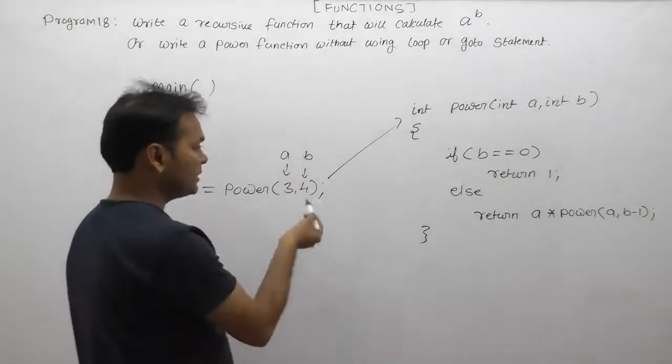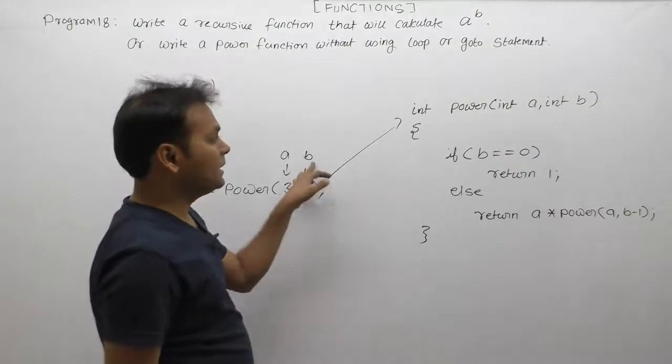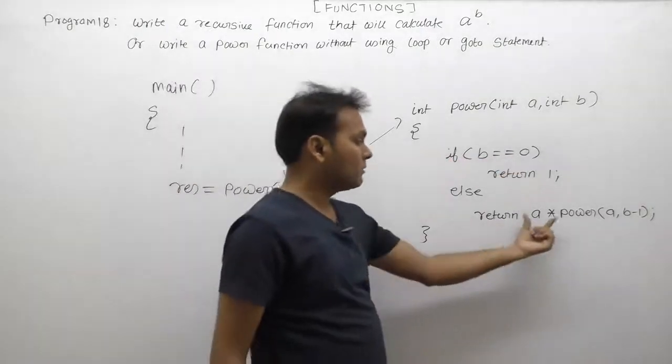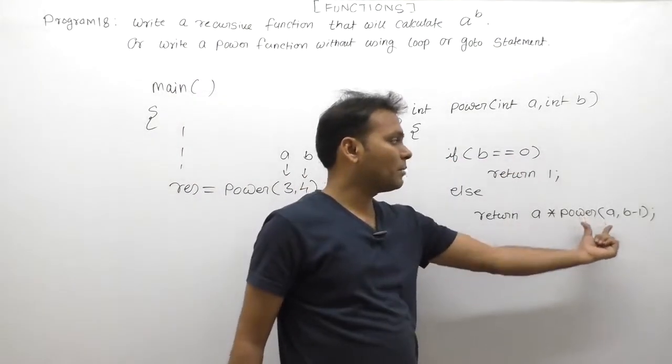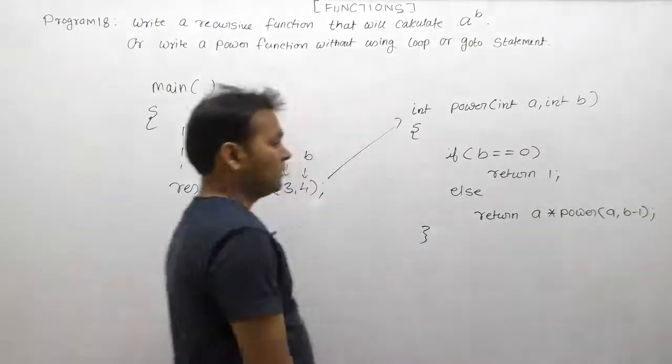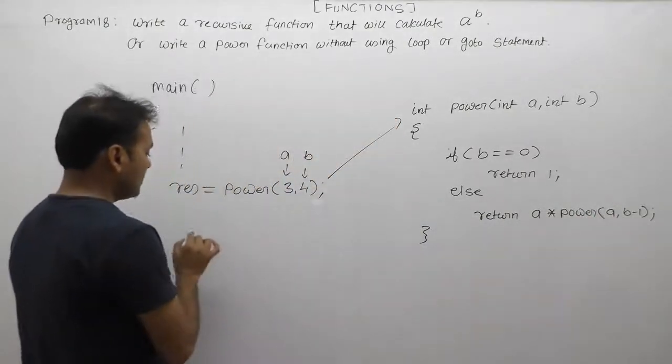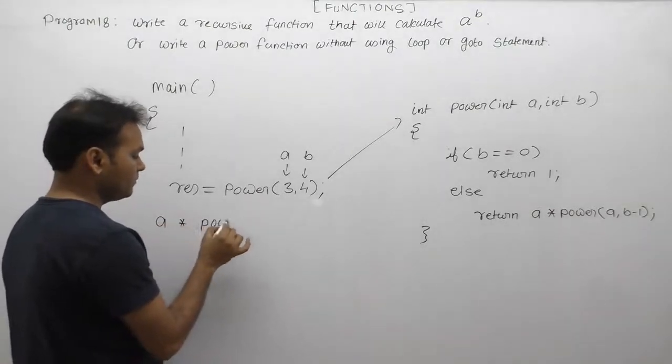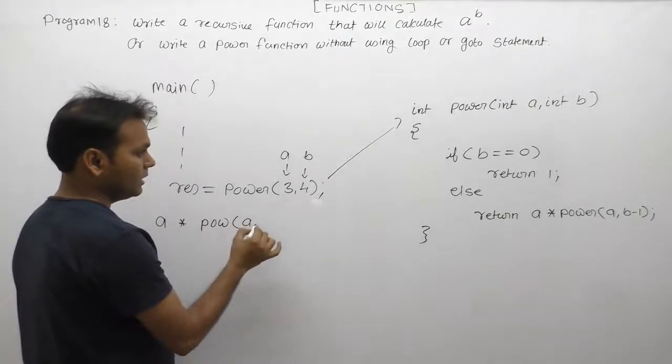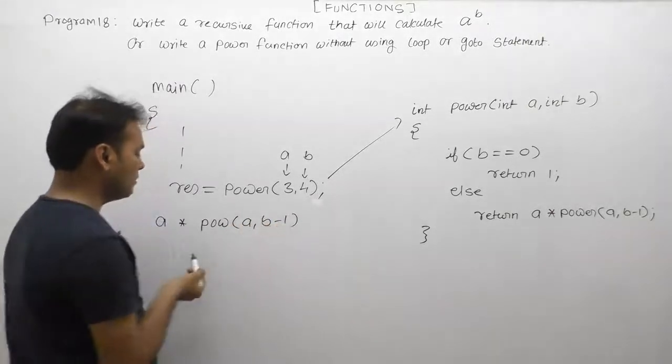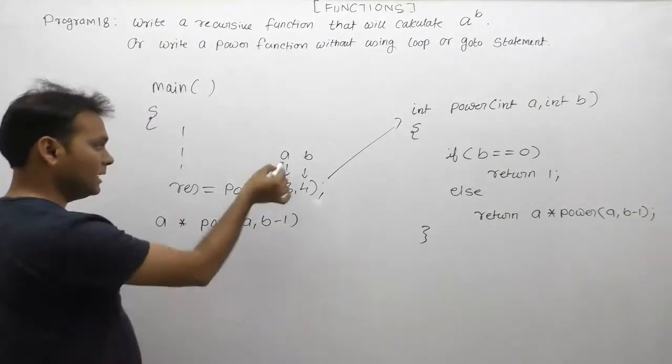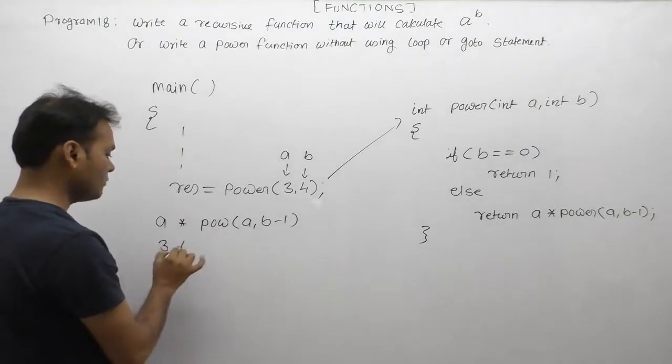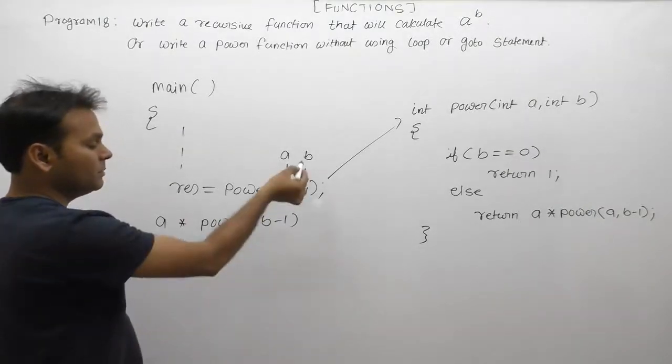In this case, until b's value becomes zero, every time we write a multiply by power(a, b-1). So we have a multiply by power(a, b-1). The value of a is 3, and the value of b is 4.